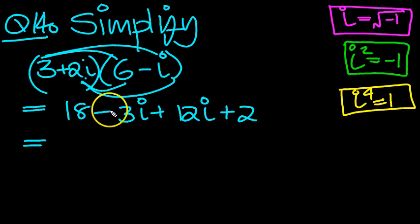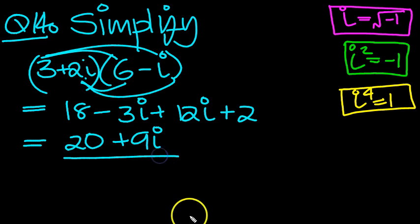So we end up with then, 18 plus 2 is 20. Minus 3i plus 12i is just 9i. 20 plus 9i.